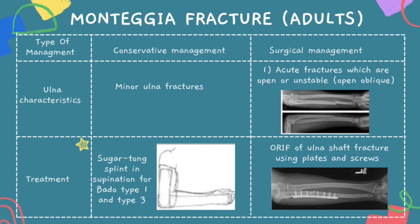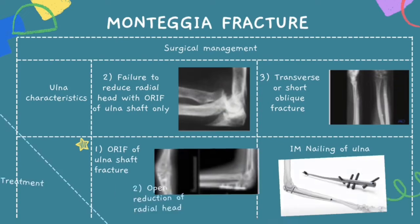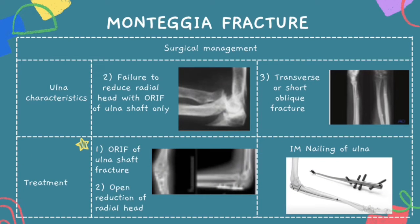For Monteggia fracture in adults, conservative management for minor ulna fractures uses sugar-tong splint in supination for Bado Type 1 and Type 3. For surgical management, there are three conditions: acute fractures that are open or unstable are treated with ORIF of the ulna shaft using plates and screws; failure to reduce the radial head with ORIF of the ulna shaft only is treated with ORIF of the ulna shaft and open reduction of the radial head; transverse or short oblique fractures are treated with IM nailing of the ulna.